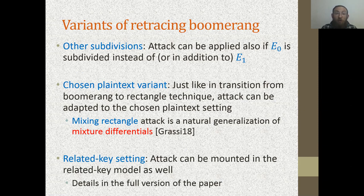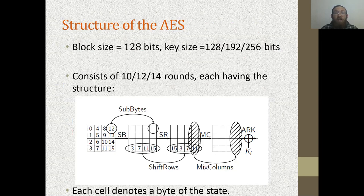Now let's move to an application: reduced-round AES. AES is the most widely used block cipher today, with a block size of 128 bits arranged in a 4×4 matrix of bytes. The key size is between 128 and 256 bits, with between 10 and 14 rounds. Each round has four operations: SubBytes, which transforms each byte by a nonlinear operation; ShiftRows, which shifts the bytes of each row; MixColumns, a linear mixing of the columns; and AddRoundKey, which XORs a subkey to the state.